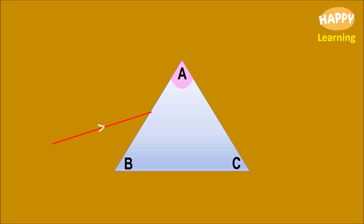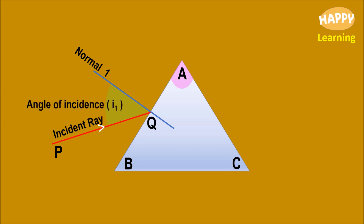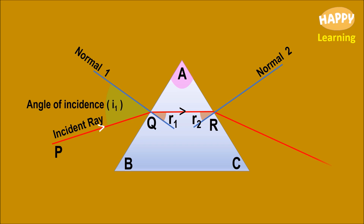This is a prism ABC. PQ is the incident ray. This is the normal drawn to the first refracting surface of the prism. The angle of incidence is noted as I1. QR is the refracted ray inside the prism; R1 is the first angle of refraction. The second normal is drawn to the second refracting surface of the prism. R2 is the second refracting angle. RS is the emergent ray.